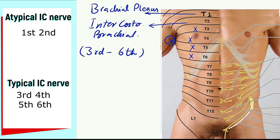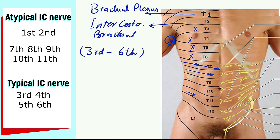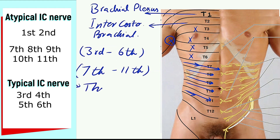After this, intercostal nerves 7 to 11 supply the thorax, but after supplying the thorax they move to the abdomen — so they supply both the thorax and the abdomen. Intercostal nerves 7 to 11 are therefore named thoracoabdominal nerves and are classified as atypical intercostal nerves.